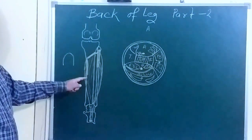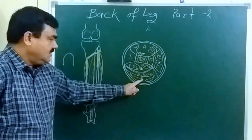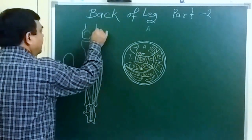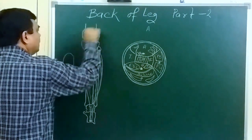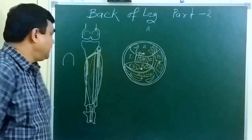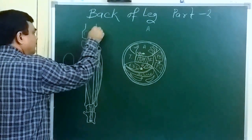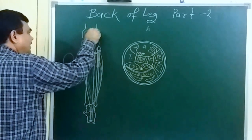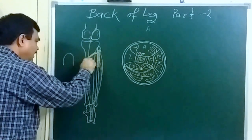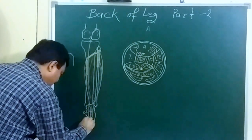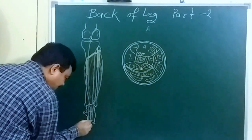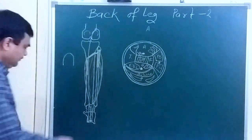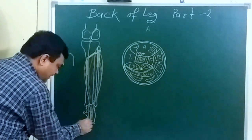The muscle which is just superficial to this is the plantaris. It takes origin from the lateral supracondylar ridge. It has a small belly and a long tendon. It is inserted on the posterior surface of the calcaneum, medial to the insertion of the soleus.